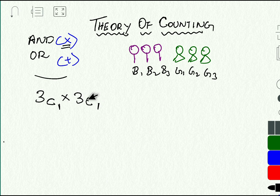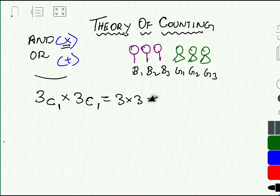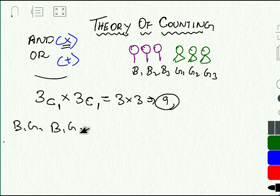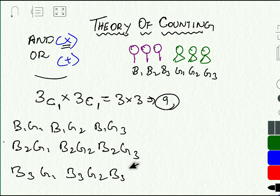So 3C1 into 3C1, because from boys we select one and from girls we select one — it is nothing but 3 into 3. We totally get nine such combinations possible. To elaborate: we get B1 with G1, B1 with G2, B1 with G3; similarly B2 with G1, B2 with G2, B2 with G3; B3 with G1, B3 with G2, B3 with G3. In this way we totally get nine selections — nine combinations possible.